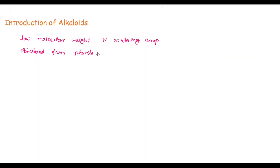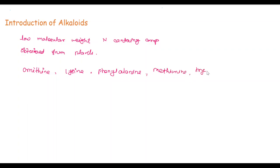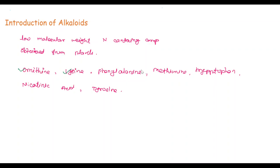The alkaloids are very poisonous but are used medicinally in small quantities. The most common amino acids that act as precursors in alkaloid biogenesis are: ornithine, lysine, phenylalanine, methionine, tryptophan, nicotinic acid, and tyrosine. In our syllabus, we discuss only ornithine, lysine, tryptophan, nicotinic acid, and tyrosine.